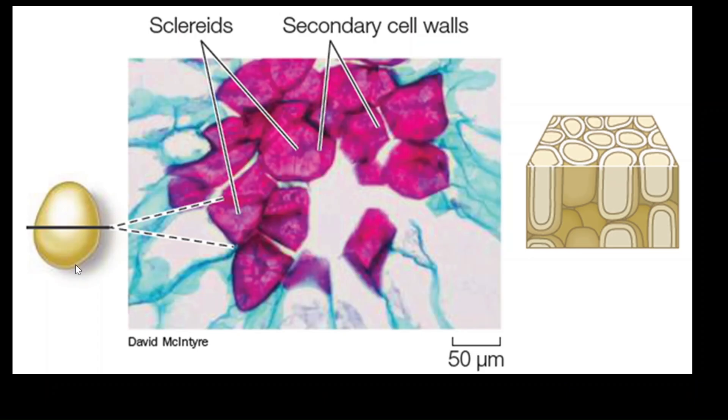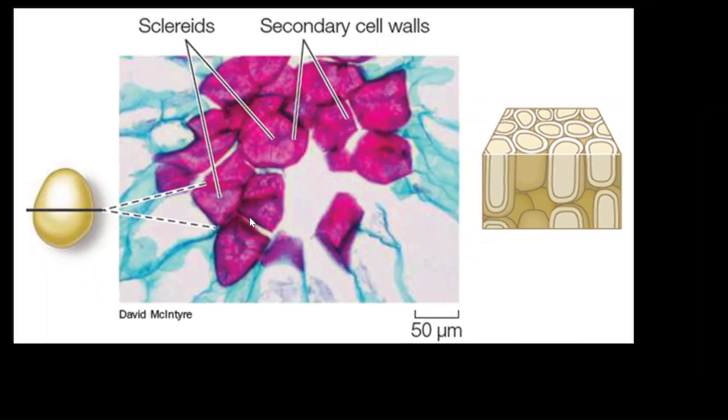These are sclereids, which are more rounded cells. Sclereids are primarily found in the fruit wall, epidermal scales, petioles of water plants, etc. They are often found in angiosperms and mostly in dicots rather than in monocots. Again, here, depending upon their appearance and function, there are different types.